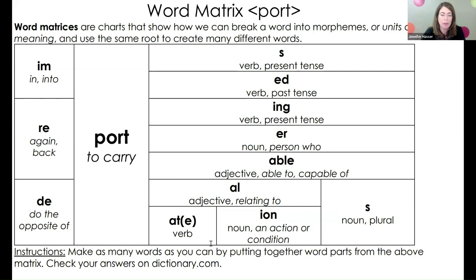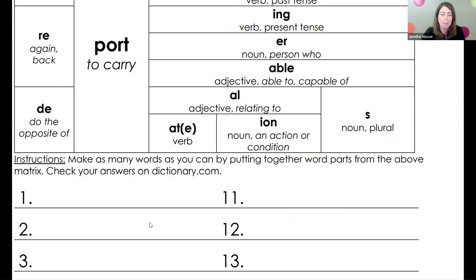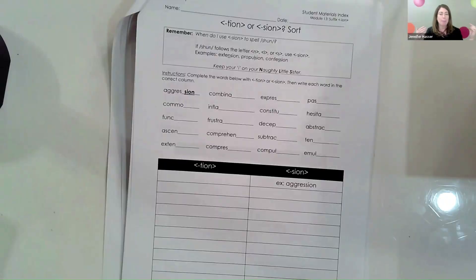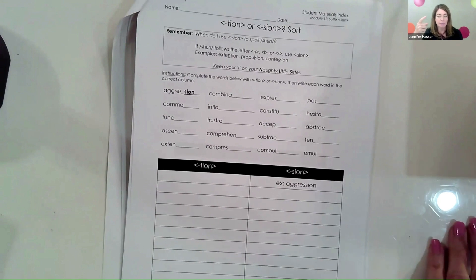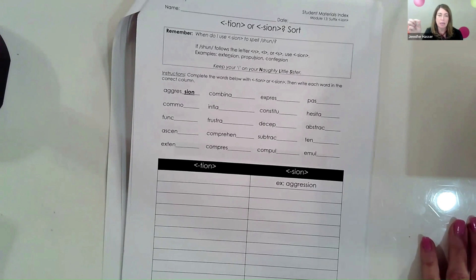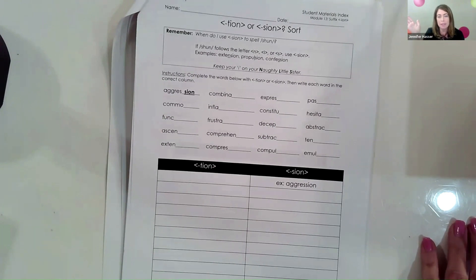We'll go over that a little bit more. Now we're going to talk about the 'shun' sound, because there are two ways to approach it: phonology and morphology. The phonology of 'tion' is the pronunciation. Remember when I said we're going to have words where when we pronounce them, they don't break at the suffix — the morphemes are not going to line up with the syllables.